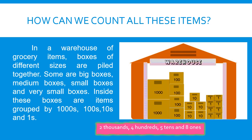There are two thousands, four hundreds, five tens, and eight ones. If we put together all these values, we can say that there are a total of 2,458 grocery items in the warehouse.